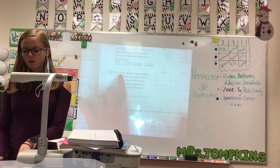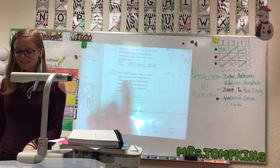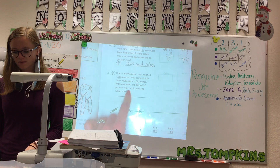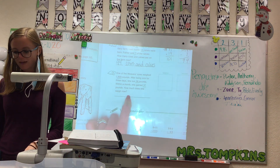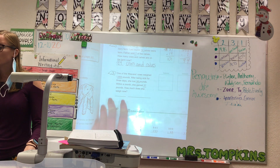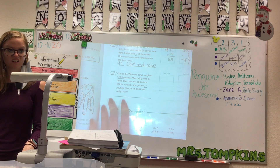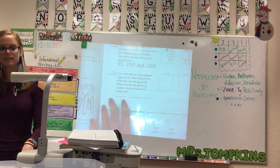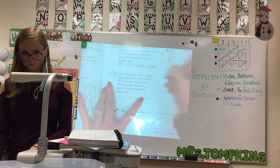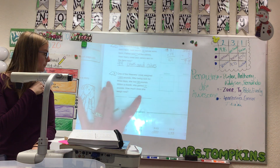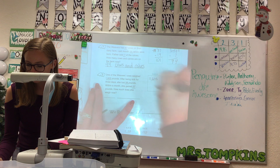One of the Weaver's cows weighed 1,605 pounds — that's a big cow. After being sick for three days, she lost 58 pounds. Then within a month she gained 37 pounds. How much does she weigh now? So what would be step one? Our cow weighs 1,605 pounds, then she got sick and she lost 58 pounds. What do I need to do, Zane? 1,605 goes on top and 58 goes on the bottom.